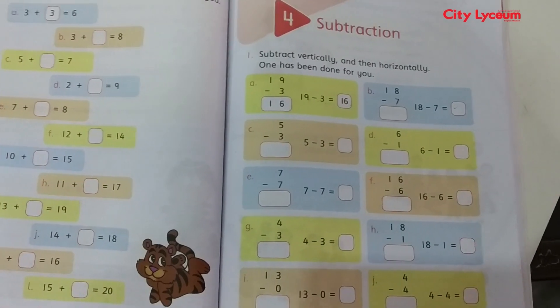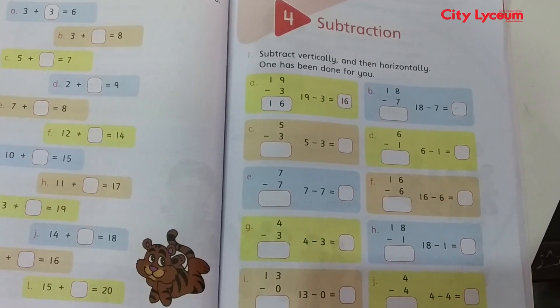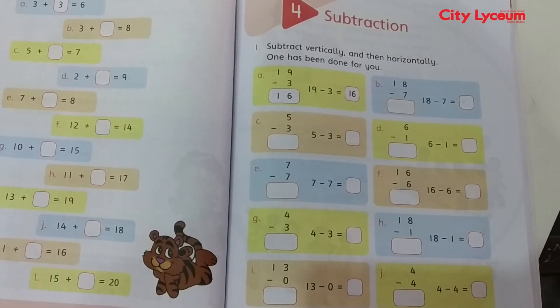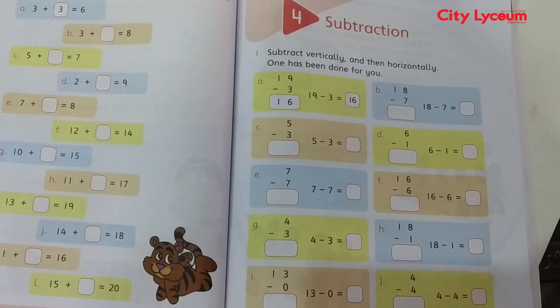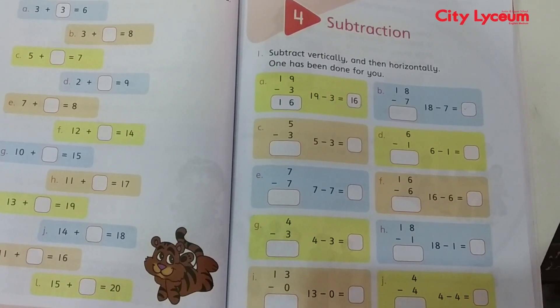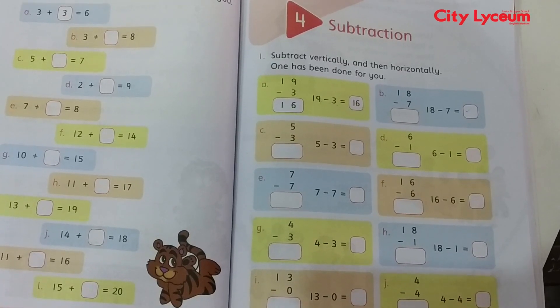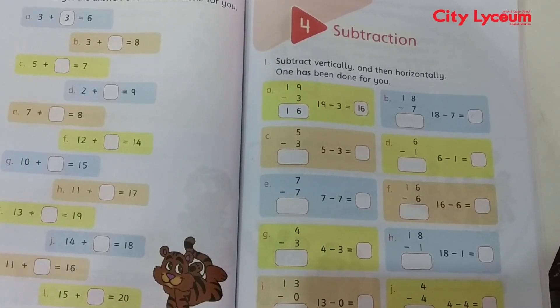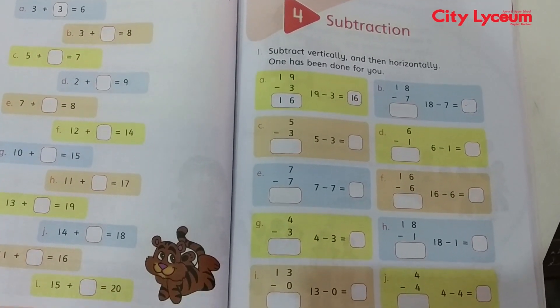71. Today our topic is subtraction. We will subtract vertically and horizontally. We will see Activity Number 1: Subtract vertically and horizontally. One has been done for you. I will tell you all questions, I will tell you how to minus vertically and horizontally.